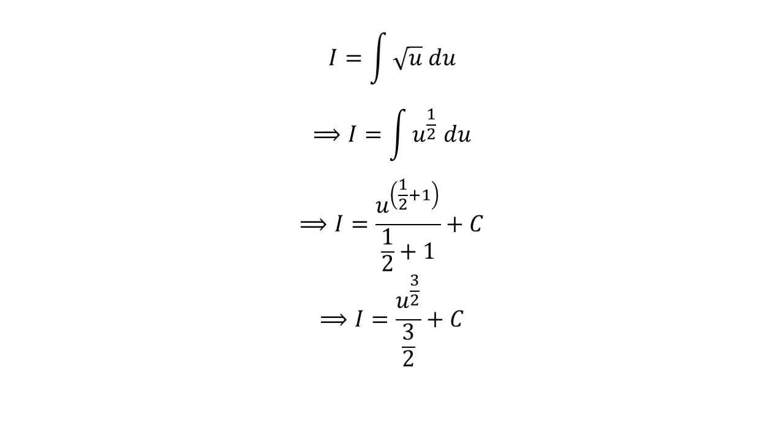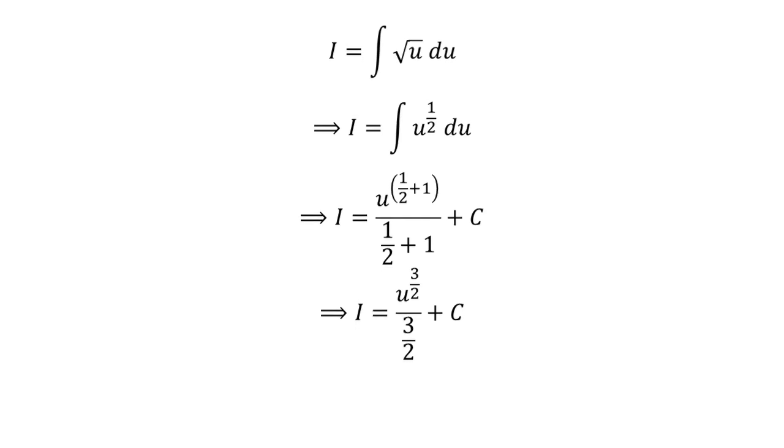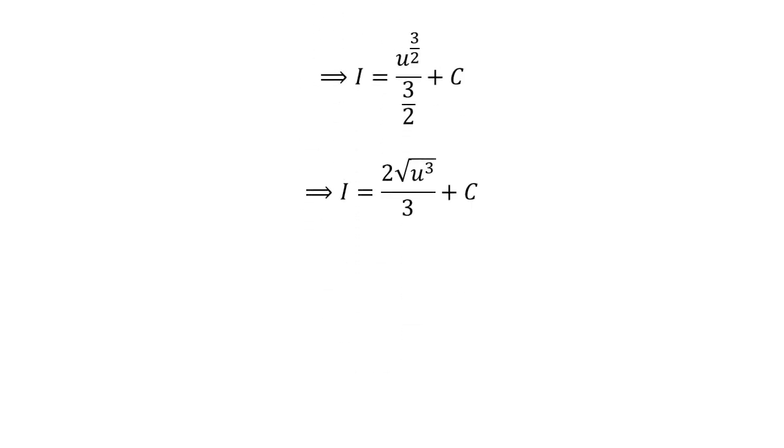As 1 plus half is equal to 3 upon 2, so the exponent of u is 3 upon 2 and the denominator is 3 upon 2. Further simplification gave us I is equal to 2 times square root of cube of u upon 3 plus capital C.